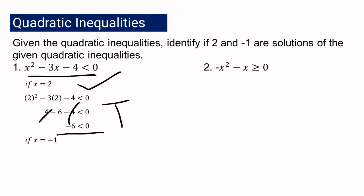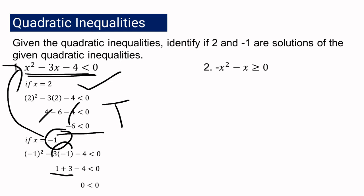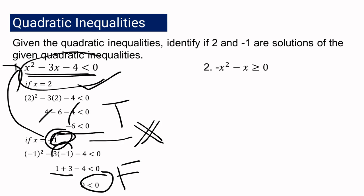Now let us check if negative 1 is also a solution. Substituting negative 1 for x: negative 1 squared minus 3 times negative 1 minus 4 is less than 0. Simplifying: 1 plus 3 minus 4 gives 0, so we have 0 is less than 0. This is a false statement because 0 is not less than 0. Therefore, negative 1 is not a solution to our quadratic inequality.